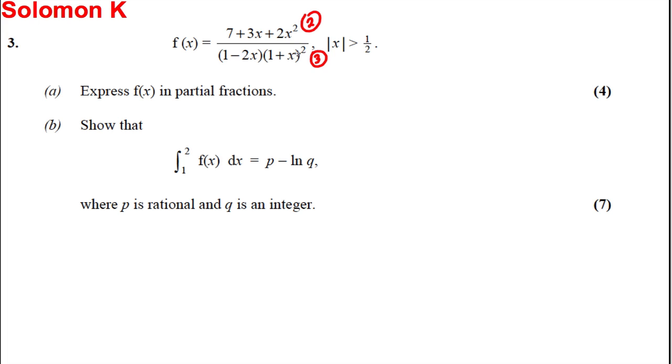We've got to know what rule to use. And then we're going to work out an integral using part A and we're going to have it in the form P subtract ln Q, where P is rational, that means it's a fraction and Q is an integer. Let's have a go at part A.